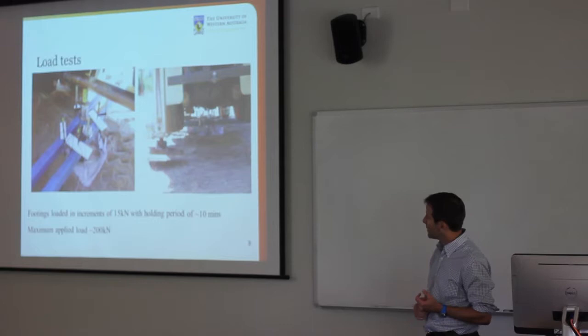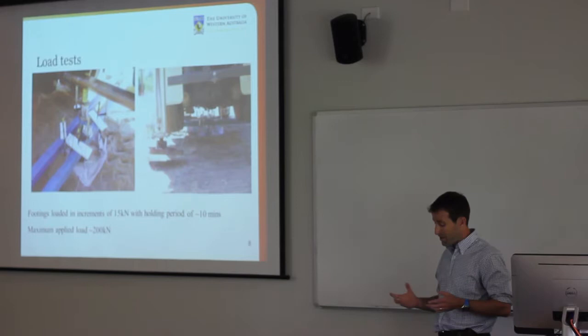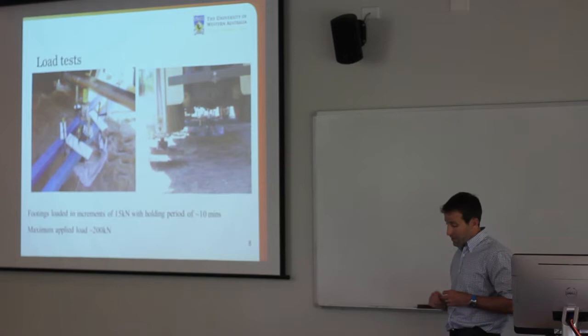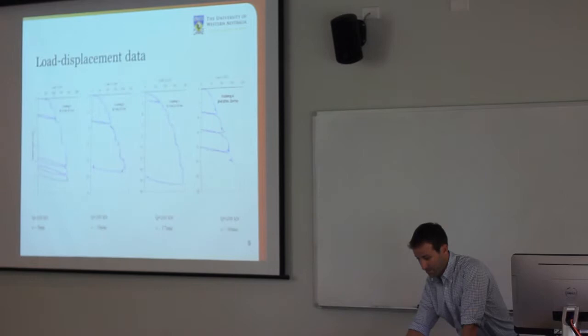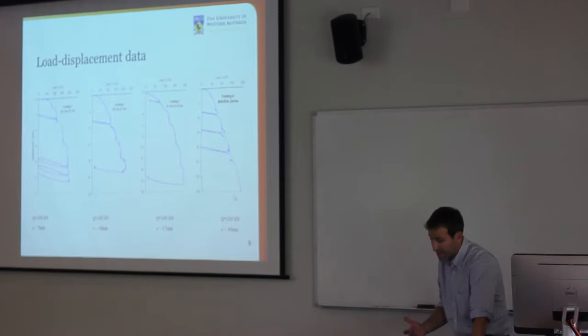Participants were asked to predict the settlement of each of the four foundations at loads of 100 kN and 180 kN — eight predictions in total across four footings at two load levels. The footings were loaded with a 25-tonne CPC truck in increments of about 15 kN, with some hold periods and unload-reload loops. The load-displacement data showed that footing number one, the largest, had about 5 mm of settlement at 200 kN, while footing number four, the smallest, had around 40 mm of settlement under the same load.